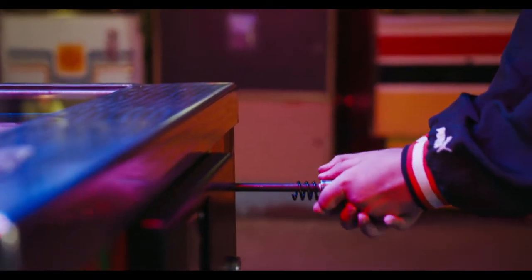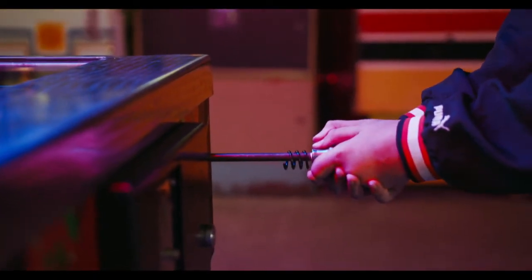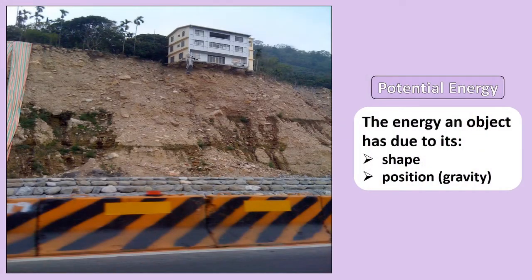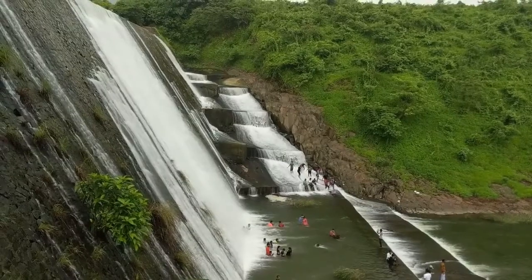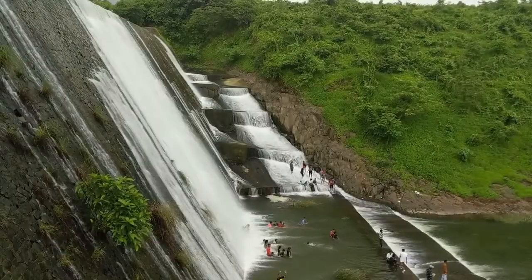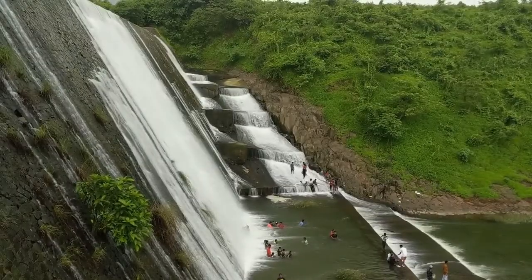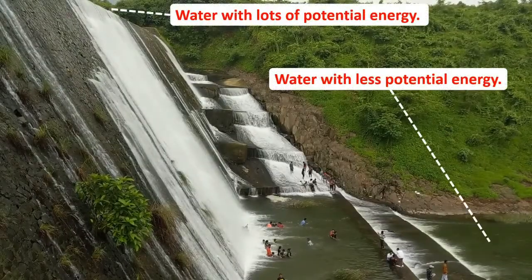Stretched springs also contain lots of potential energy because once you let them go, they revert back to their original shape. An object's position can also allow it to have potential energy. The building in this image has lots of potential energy due to its position teetering on the edge of a cliff — it has the potential to move once enough of the cliff has been eroded away, at which point gravity will cause it to fall. The water at the top of this dam also has lots of potential energy, and once it reaches the edge, gravity gives it the potential to move all the way to the bottom. Once the water reaches the bottom of the dam, it has much less potential energy.